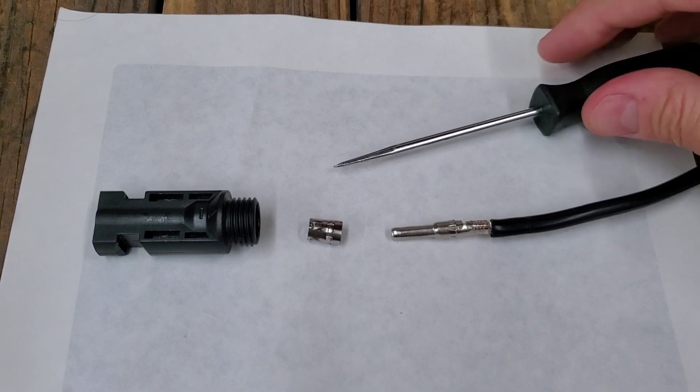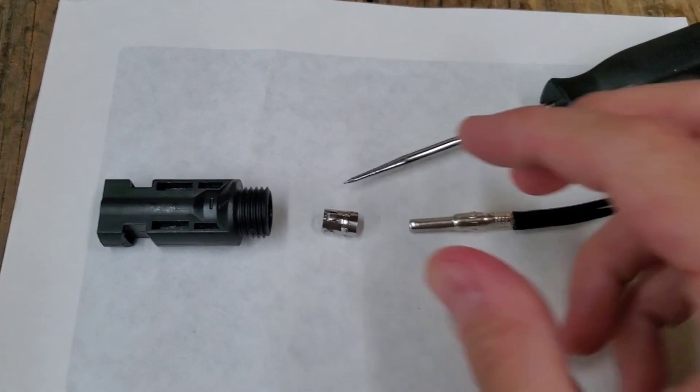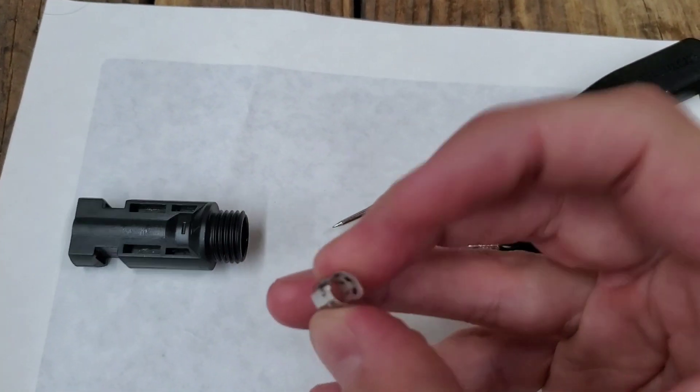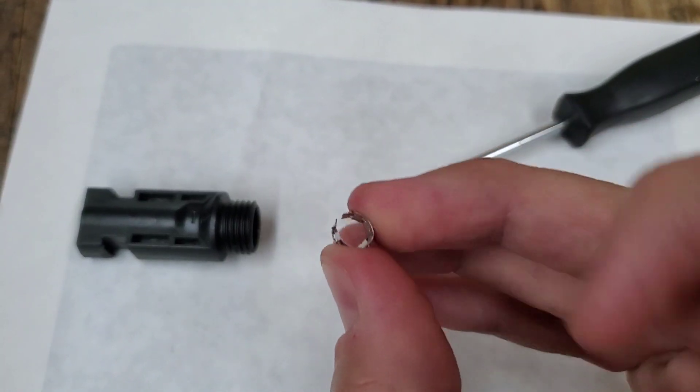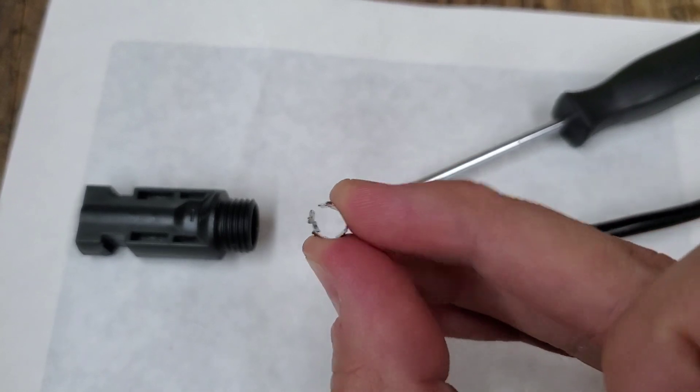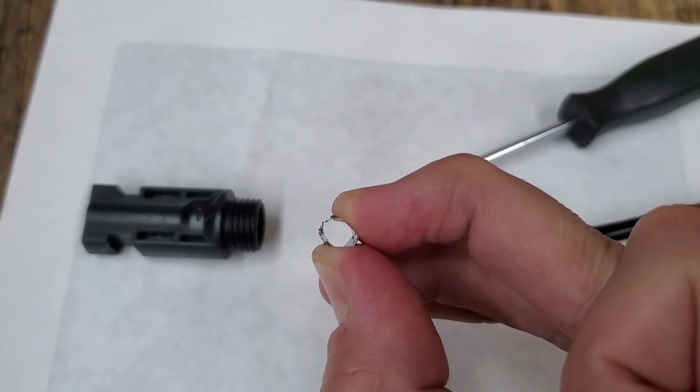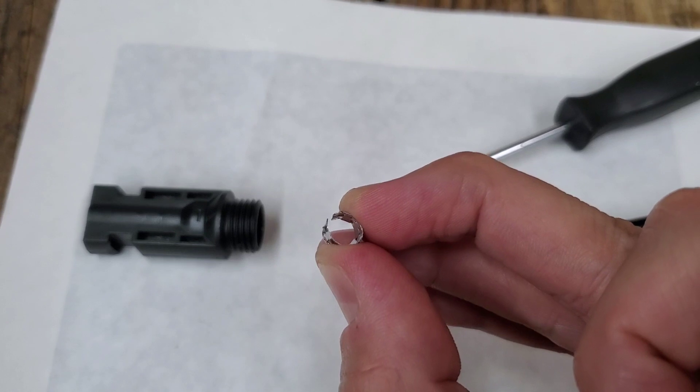I did this by using a pick to help squeeze this away from the housing, and then I yanked on the wire and it slid right out.